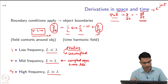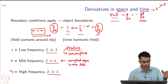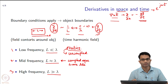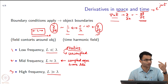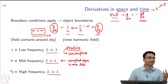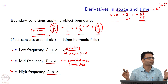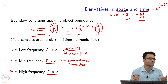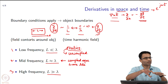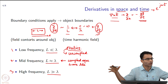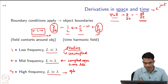The third regime is where the object size is much much larger than the wavelength. A common example is light: visible light has a wavelength of about 500 nanometers, while everyday objects are centimeters or meters in size. Here the wavelength is much much smaller than the object. In this regime the field need not vary dramatically around the object, and you get ray-like solutions — this is the regime of optics.